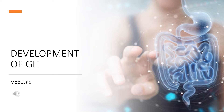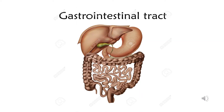In today's class we will be seeing the first module of the development of the gastrointestinal tract or the development of the digestive system. The gastrointestinal tract or the human digestive system consists of the esophagus, stomach, and the small and large intestines. The small intestine consists of three parts: the duodenum, jejunum, and ileum, whereas the large intestine comprises the cecum and appendix, ascending colon, transverse colon, descending colon, and rectum.